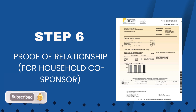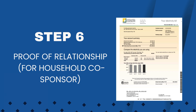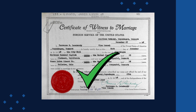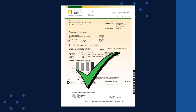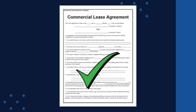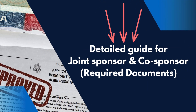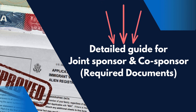Step six: Proof of relationship or household co-sponsor. If the co-sponsor is a member of the same household as the petitioner, you need to show proof of the relationship. Acceptable documents include a marriage certificate, birth certificates, or proof of shared address such as joint utility bills or lease agreements. This shows that the co-sponsor is in a close enough relationship to justify adding their income to the petitioner's.